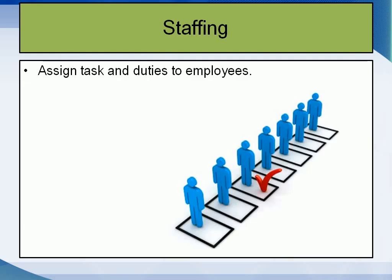Optimum utilization of human resources is essential. Managers and trainers spend money on recruitment, selection, training, and development of employees. In order to get optimal output from persons, the staffing function should be performed in an efficient manner. Many multinational companies spend a lot of money on employees because they need good self-utilization of human resources.